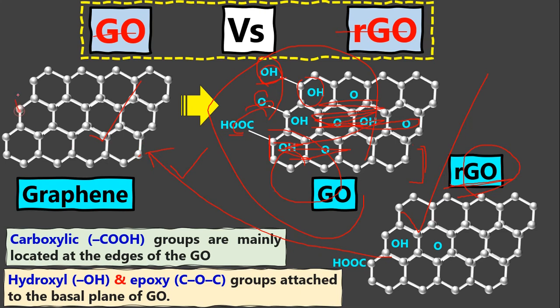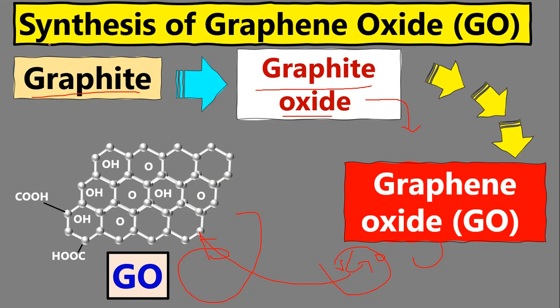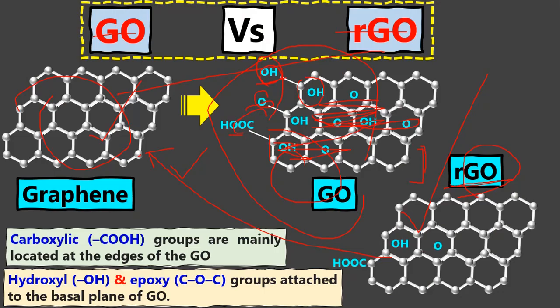This is why we cannot get graphene directly; instead we go through a lengthy process: graphite → graphite oxide → graphene oxide → RGO, and that RGO is more or less what we call graphene. Graphene is the structure where carbon atoms are arranged in a hexagonal honeycomb shape extending in two dimensions. When we have many functional groups of these three types, we call it graphene oxide; when we have very few functional groups, we call it reduced graphene oxide.